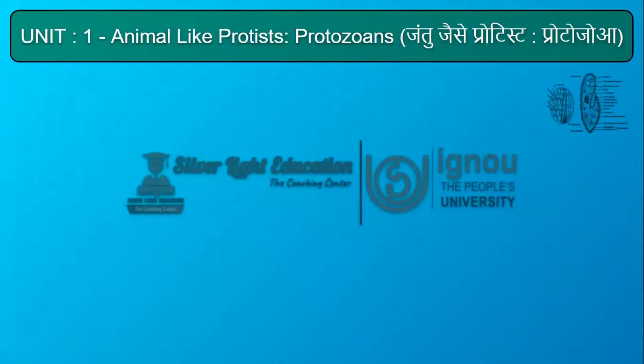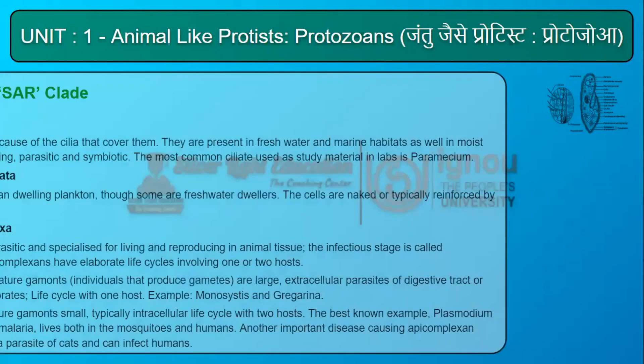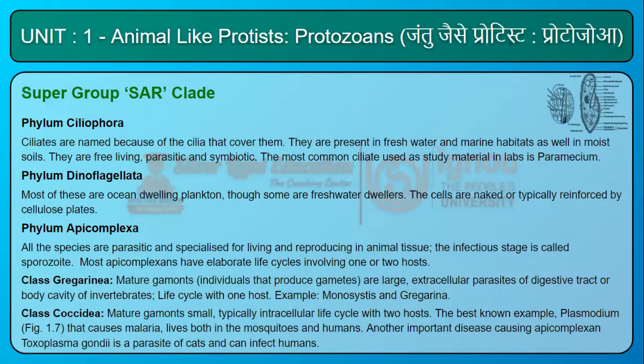Phylum Ciliophora: Ciliates are named because of the cilia that cover them. They are present in freshwater and marine habitats as well as moist soils. They are free-living, parasitic, and symbiotic. The most common ciliate used as study material in labs is Paramecium.